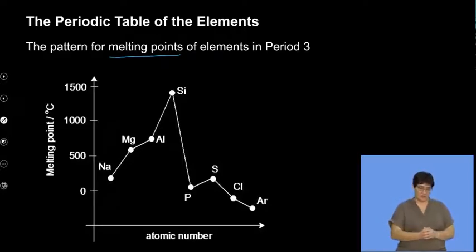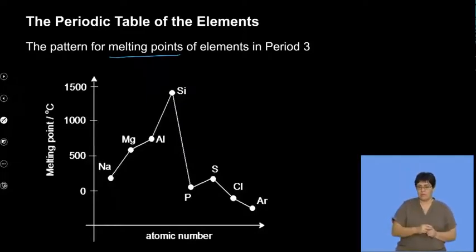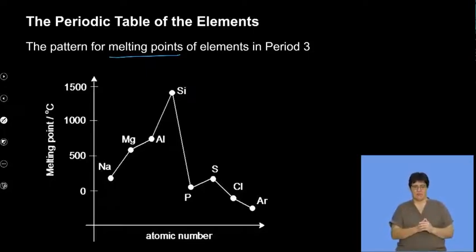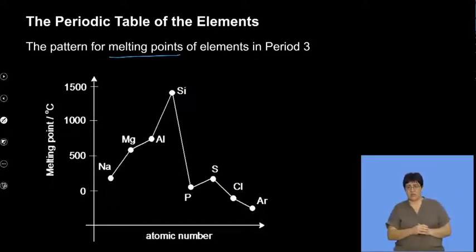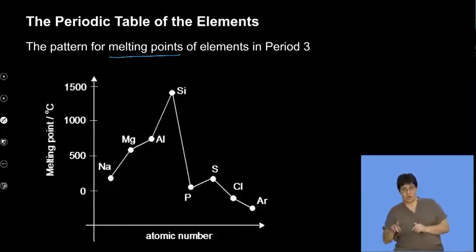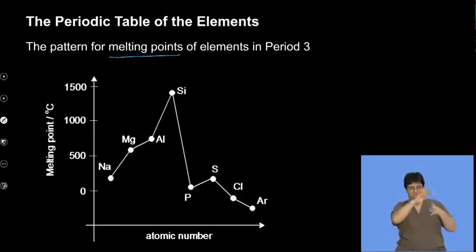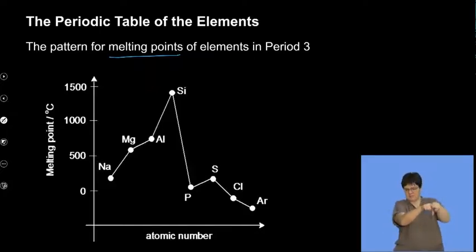Looking at the melting points of elements in period three: sodium, magnesium, aluminum, and silicon are in the same period — the same horizontal row. As you go from sodium to silicon, the melting points get higher and higher. Then from phosphorus to argon, the trend is downwards. This is what we mean in terms of patterns and trends as far as periodicity is concerned — within a group the physical properties are more or less the same, while within a period they obviously differ.